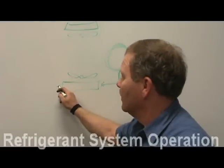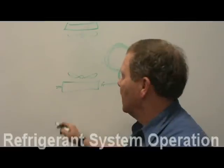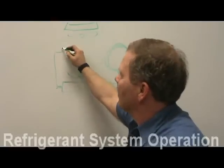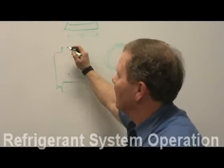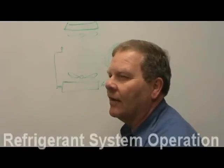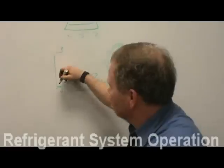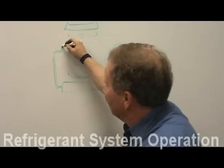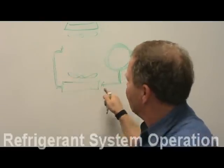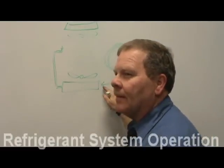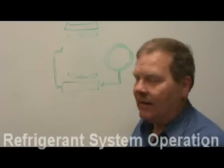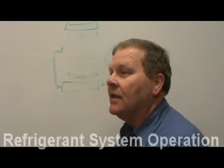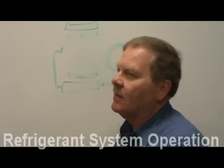Leaving the condenser, we go through an orifice tube. This system has a fixed orifice, and it's not going through a dryer on the high side. This little line is the liquid line. Right here we've got a gas that's condensing — that means it's turning into a liquid — and as it turns into a liquid, it's giving away heat, getting rid of heat.